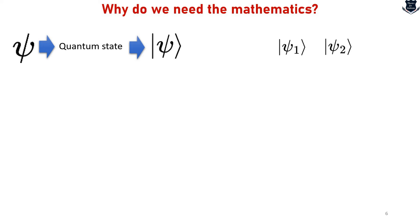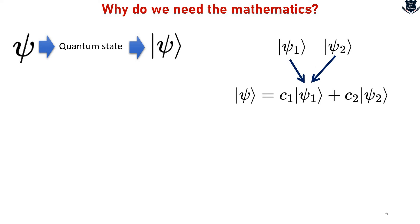One of the fundamental principles in quantum mechanics is the superposition principle. It states that if a system can be in the state psi 1 and psi 2, it can also be a linear combination of these two states. Here c1 and c2 are complex numbers that describe the probability amplitude of the system being in state psi 1 and psi 2. This is superposition.